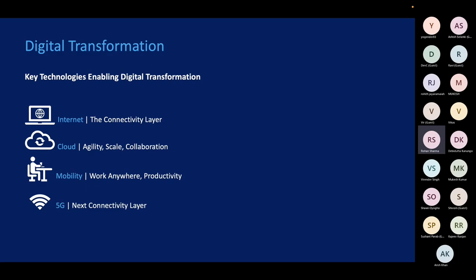The second driving factor is cloud — it is agile, scalable, and highly collaborative. Third, we have mobility: our workers are moving anywhere for maximum productivity. You can connect to any network and access your internal applications, working from anywhere. Then we have 5G as the next connectivity layer. Automation is increasing; IT and OT communication is increasing, and 5G is driving this digital transformation.